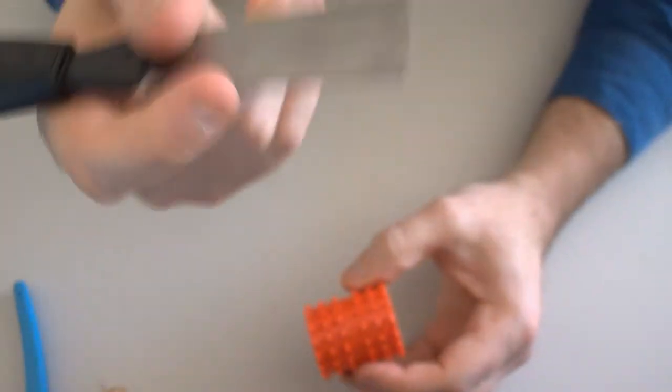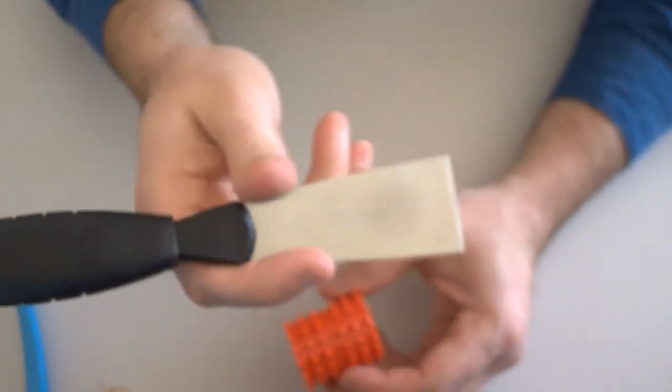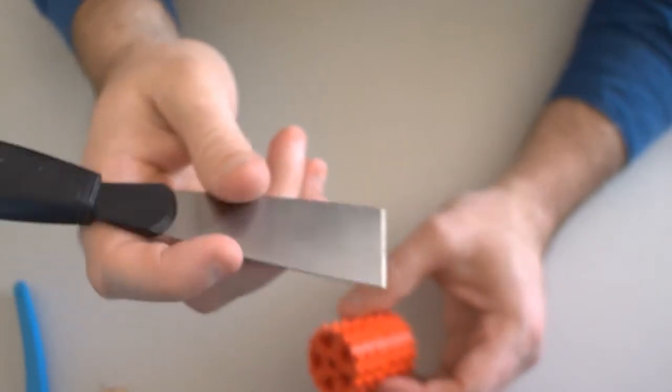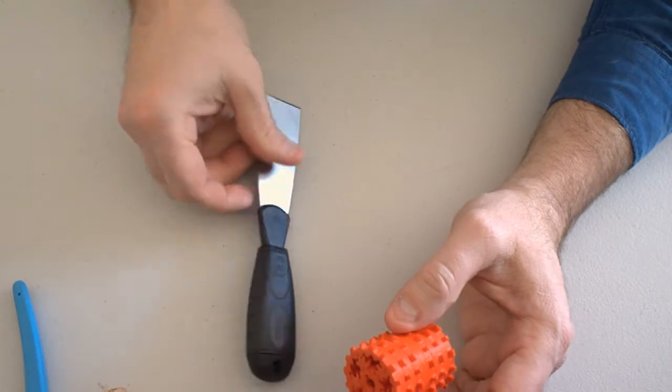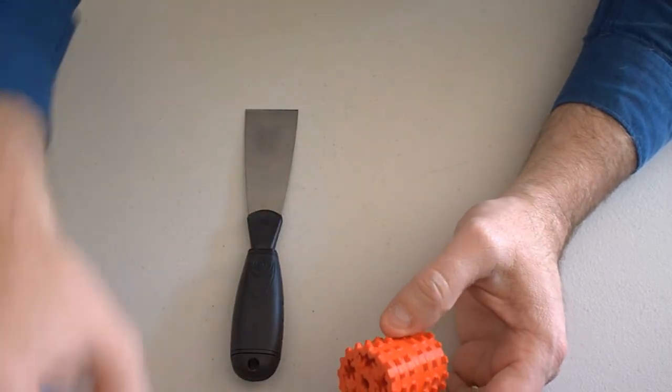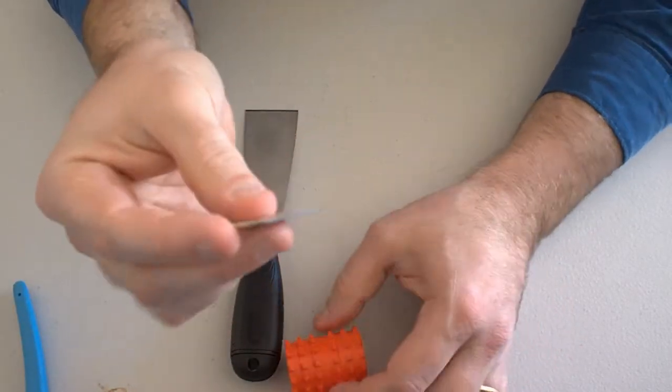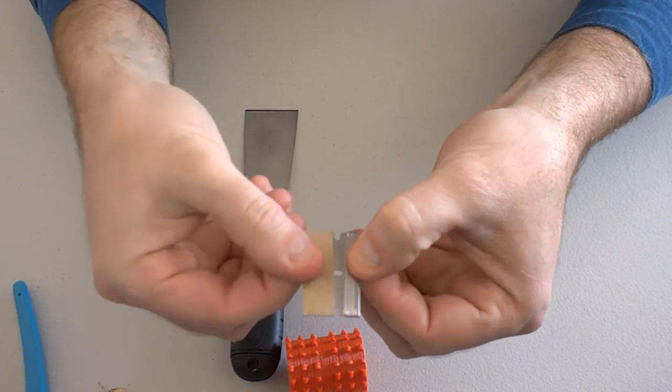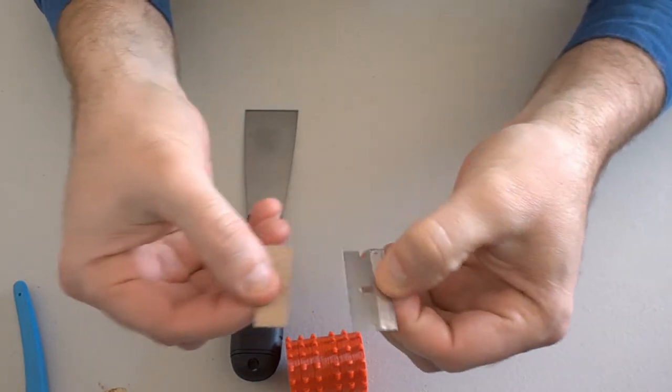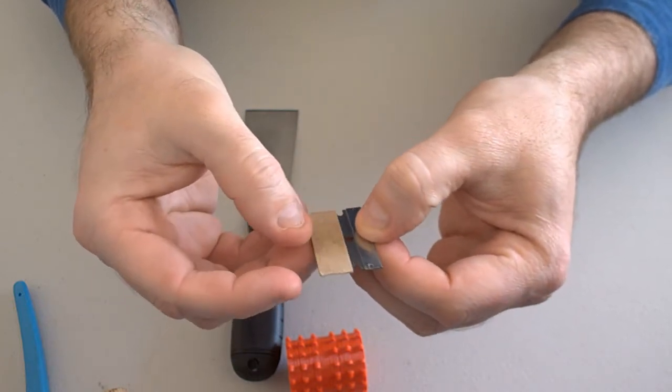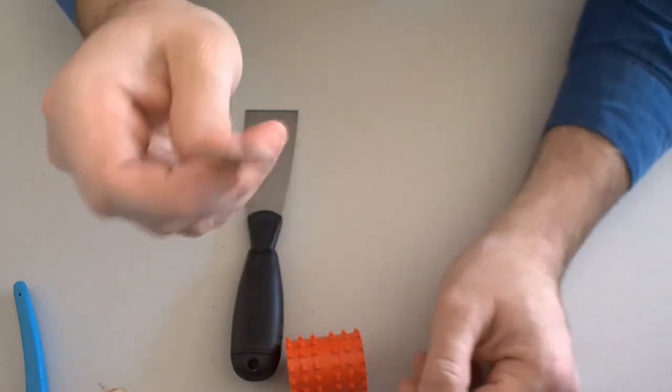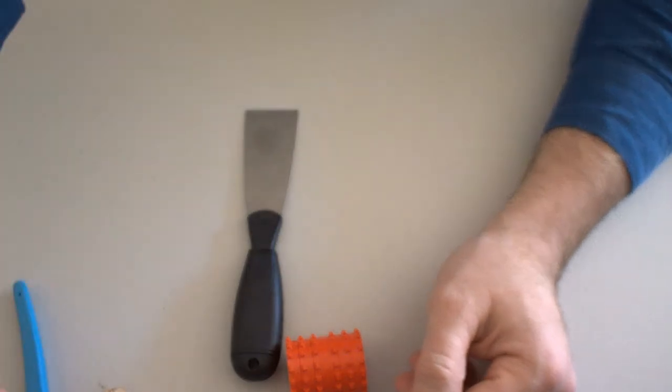I'm going to start with this spatula that came with my Ender 3 as a fairly ubiquitous tool that anyone with a 3D printer is likely to have. But my favourite tool for the job is actually one of these. It's just a small razor blade. These things will happily delaminate any two layers you stick them between with minimal effort. So careful with that. But very effective.